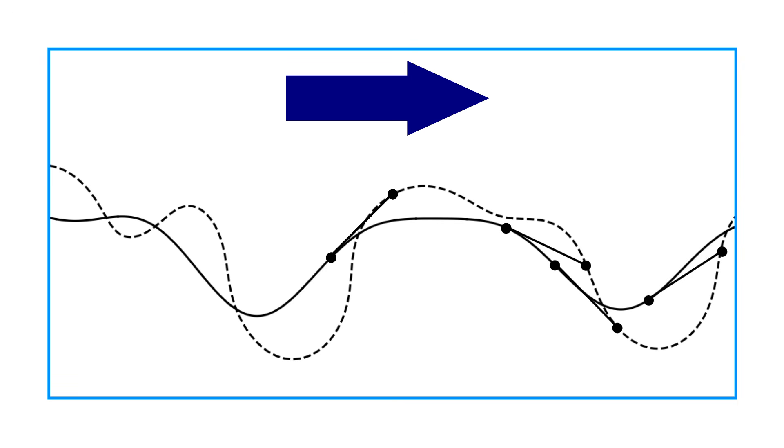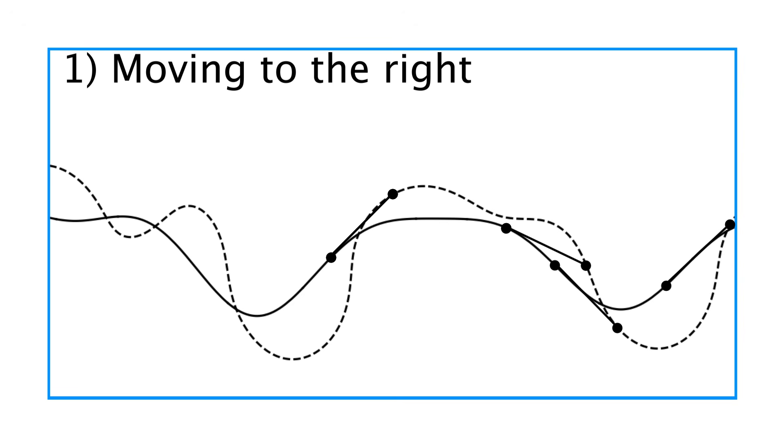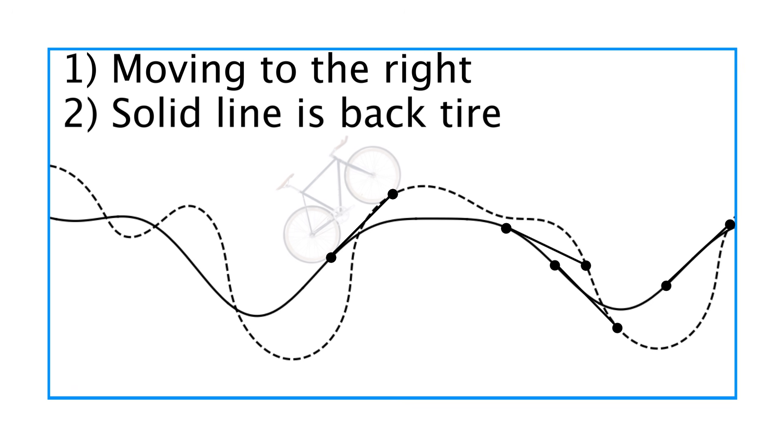You won't find that going the other way though. So there you go. The bike was traveling to the right, the solid line is the back tire's tracks, and the bike is about this long from the back to the front tire. So that's a lot of information from just two sets of tracks.